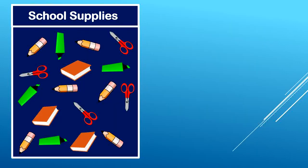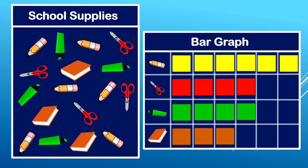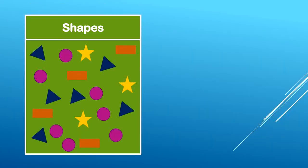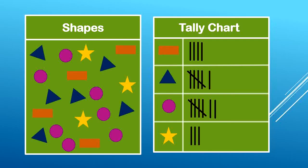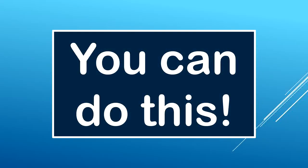Let's review a few important points. When we were looking at the school supplies picture, it was difficult to quickly tell which one has the most, least, or same amount. But when we filled out our bar graph, it was very easy — that's one reason it's so helpful to use bar graphs when looking at big groups of information. It was the same thing when we were looking at the picture of the shapes: it's difficult to tell just from the picture how many of each shape are shown, but when we put it into a tally chart, it makes it so much easier. You can do this, boys and girls — use those bar graphs and tally charts to understand the information that you're looking at.